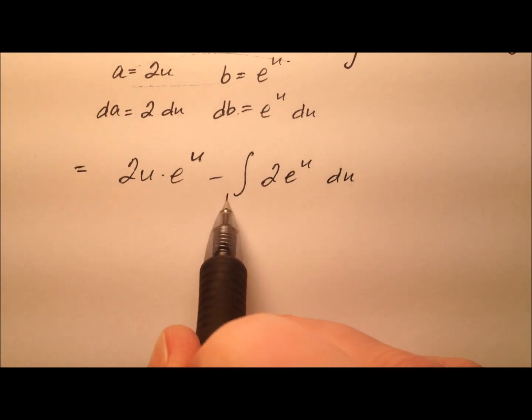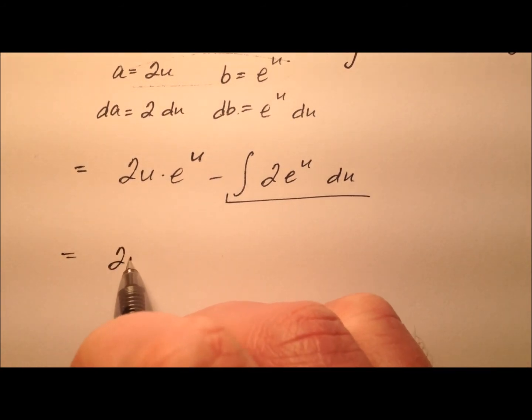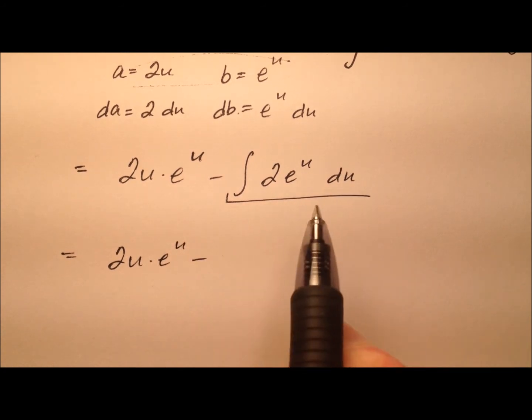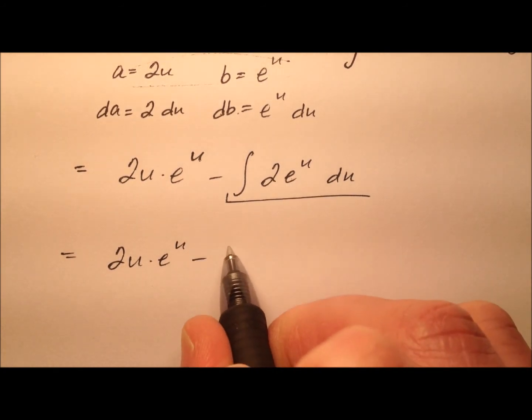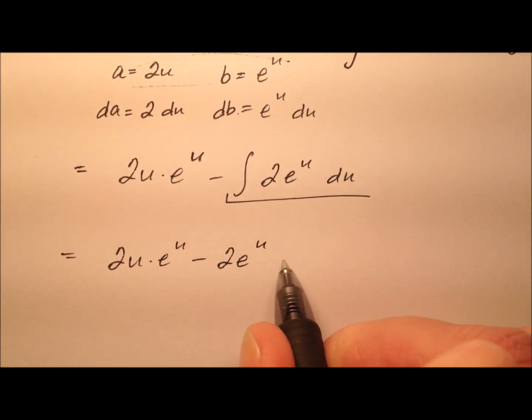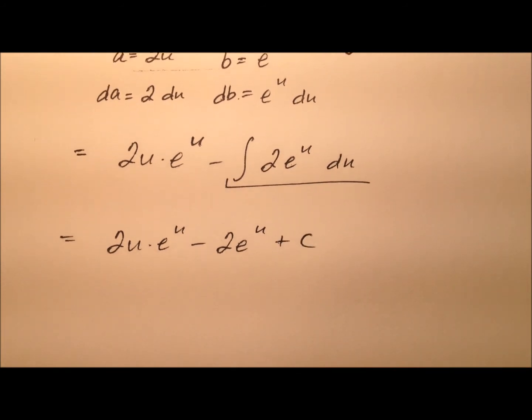Alright, this is actually a really nice integral. So we'll go ahead and copy that first part down. And the integral of 2e to the u is just 2e to the u. And then we'll stick our plus c right there as well.